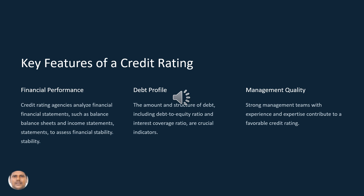What are the key features of credit rating? First, financial performance: credit rating agencies analyze financial statements such as balance sheets and income statements in order to assess financial stability. They also examine the debt profile — the amount and structure of debt, including debt-equity ratio and interest coverage ratio, are crucially considered as indicators by the credit rating agencies.